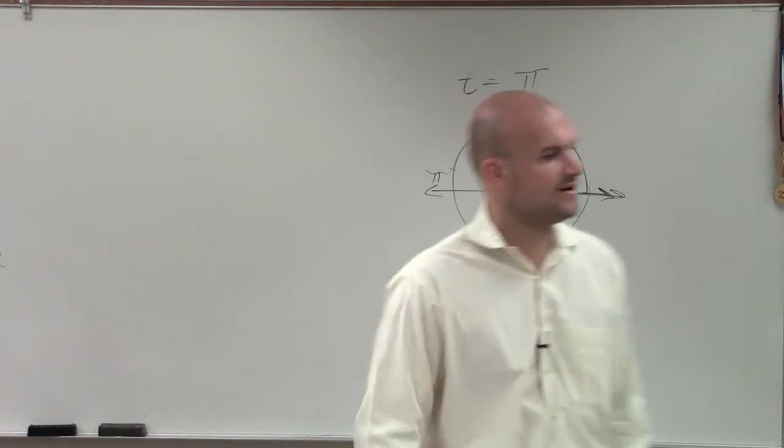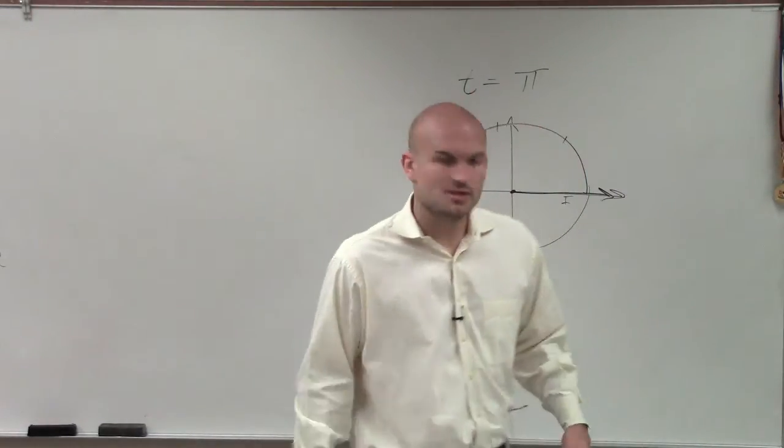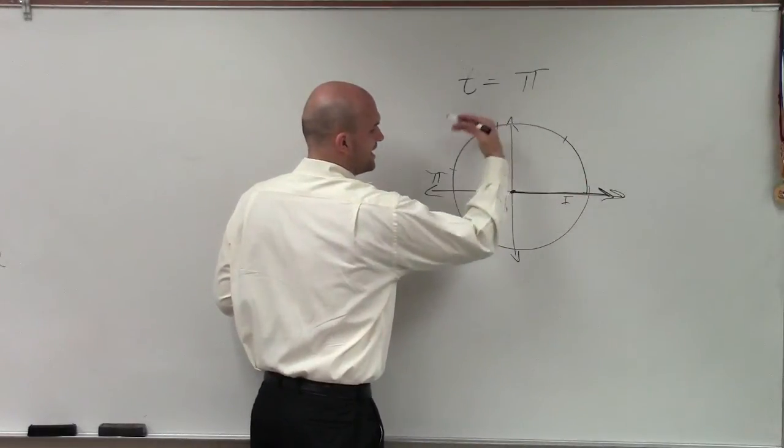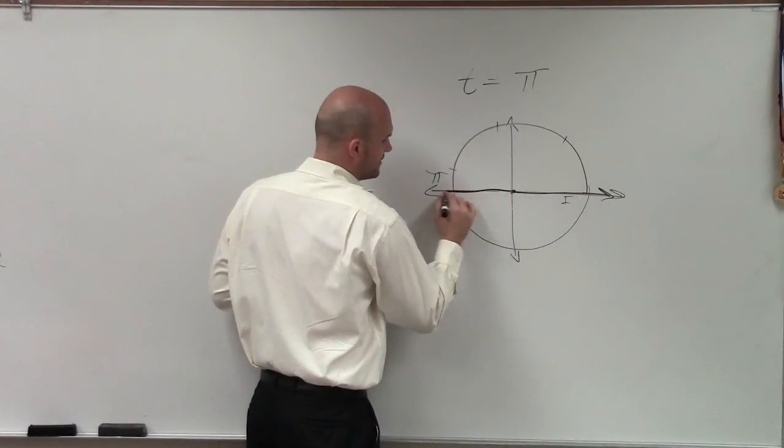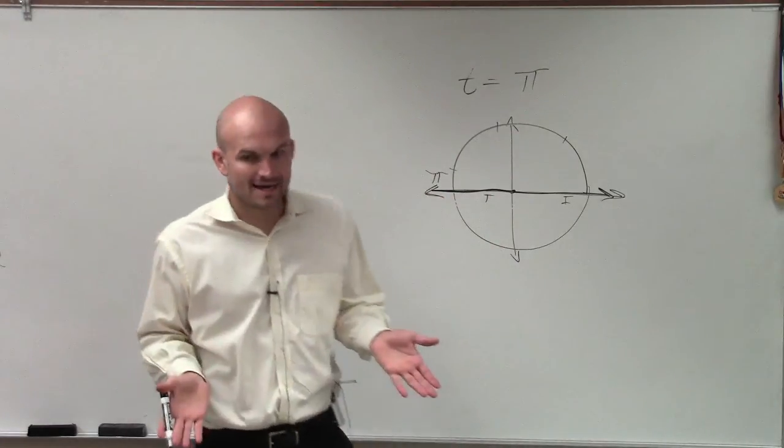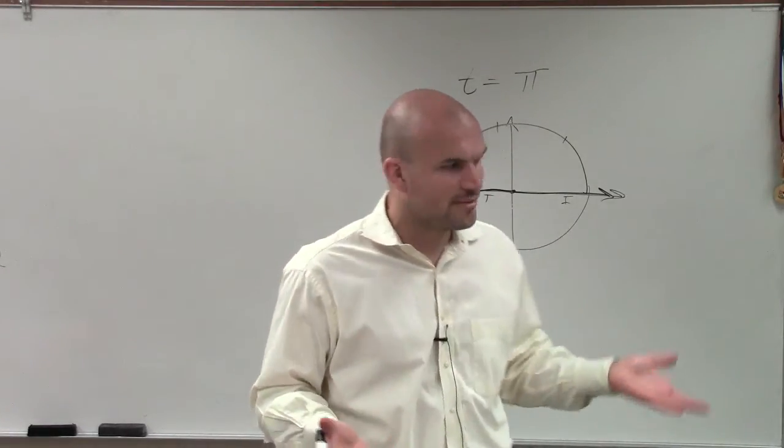3.14159 dot dot dot. So the measurement of an angle, if I was going to take one angle here and rotate it pi radians, that'd give me my terminal side here. Now, we know that pi is equivalent in degree form of 180 degrees.